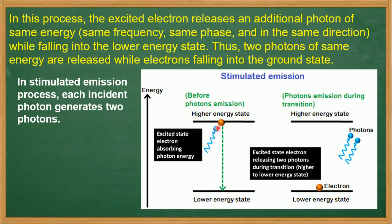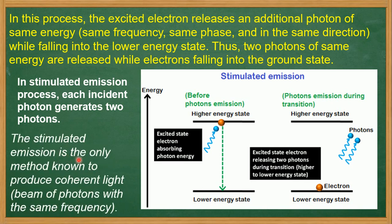In the stimulated emission process, each incident photon generates two photons — the identical two photons are emitted. Stimulated emission is the only method known to produce coherent light, meaning beams of photons with the same frequency, same wavelength, same direction, and same phase.